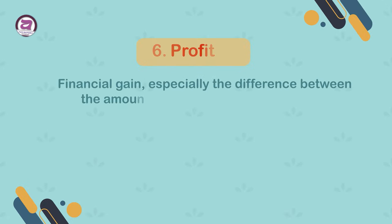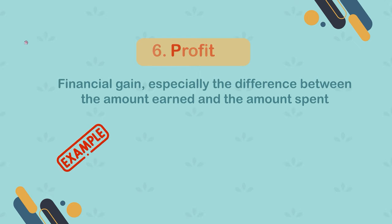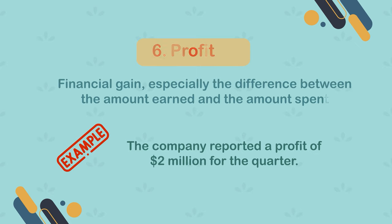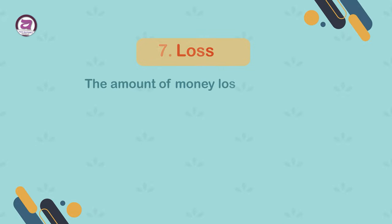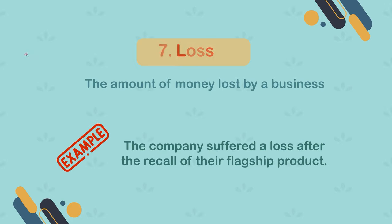6. Profit. Financial gain, especially the difference between the amount earned and the amount spent. Example: the company reported a profit of $2 million for the quarter. 7. Loss. The amount of money lost by a business. Example: the company suffered a loss after the recall of their flagship product.